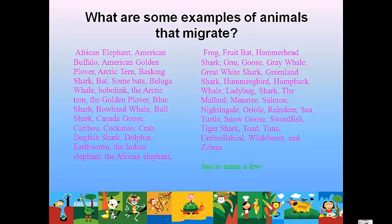Examples of animals that migrate include the African elephant, American buffalo, blue shark, bowhead whale, turtles, snow geese, swordfish, tiger sharks, frogs, fruit bats, hammerhead sharks, manatees, salmon, nightingales, and zebras — just to name a few. There are actually hundreds if not thousands of other animals that migrate as well.